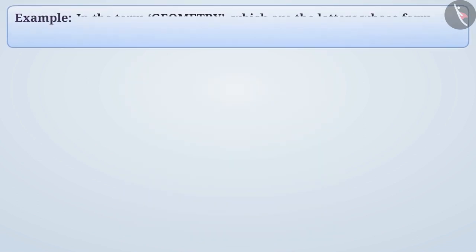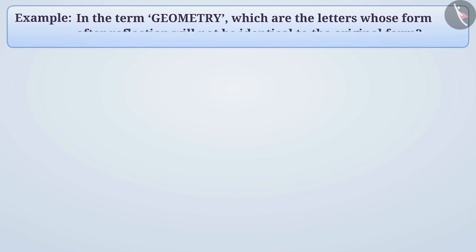Example 2: In the word geometry, which are the letters whose reflection will not be identical to the original form?